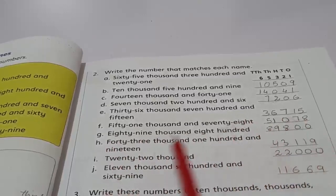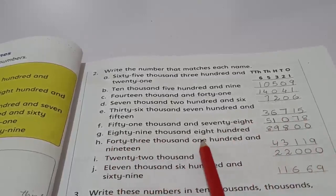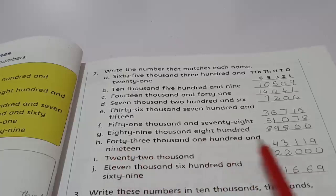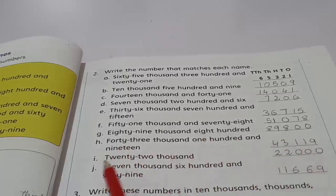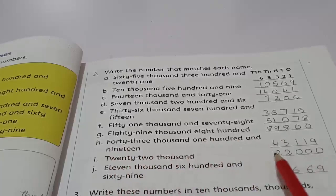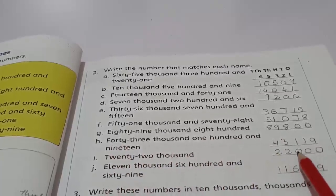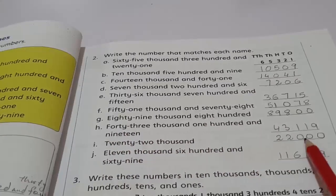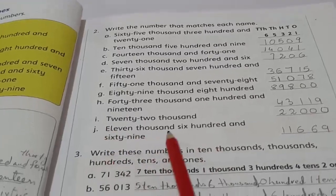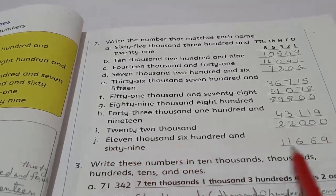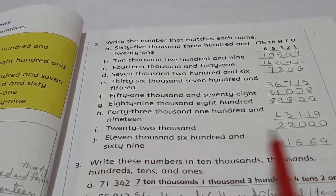Eighty-nine thousand, eight hundred - 89800. Forty-three thousand, one hundred and nineteen - 43119. Twenty-two thousand - 22000. Eleven thousand, six hundred and sixty-nine - 11669.